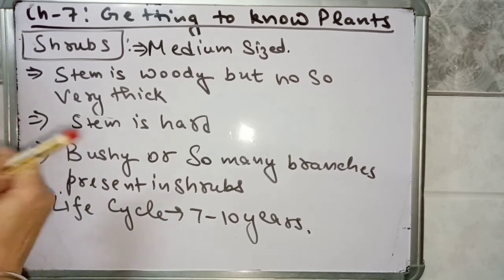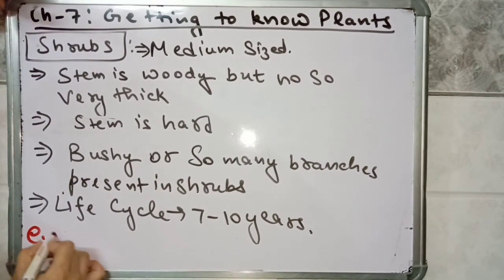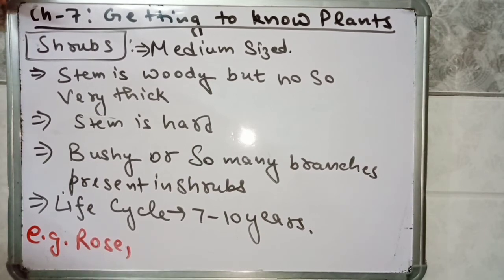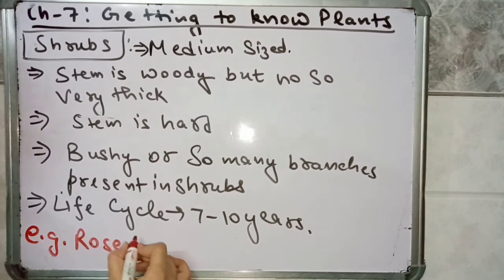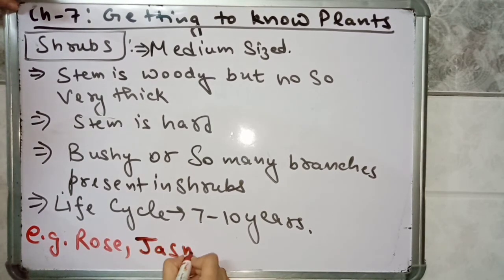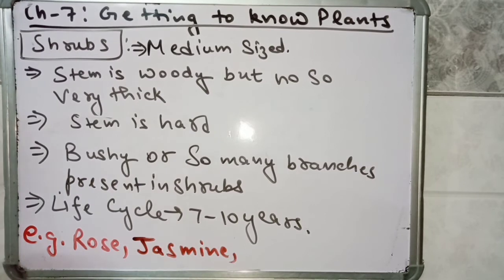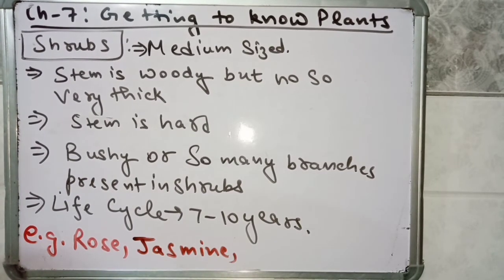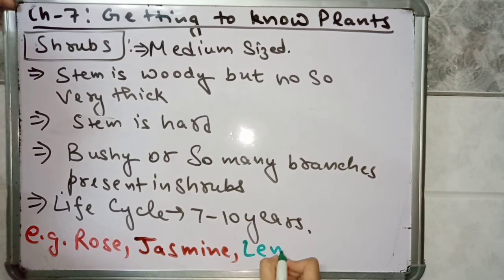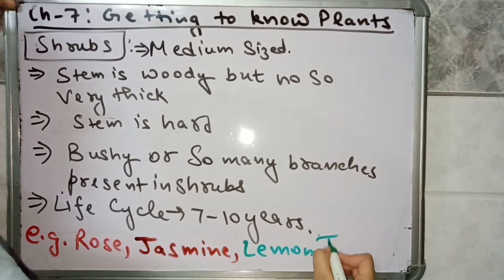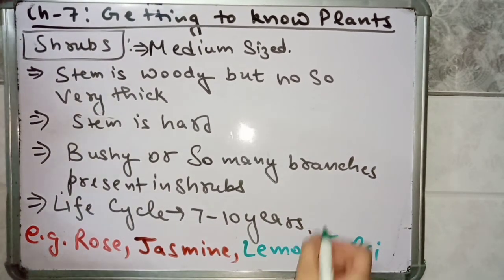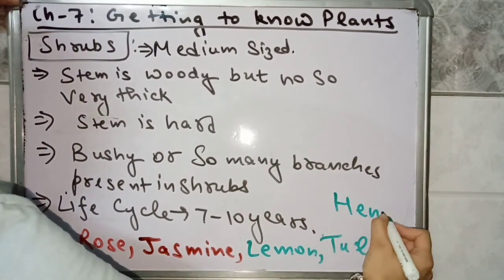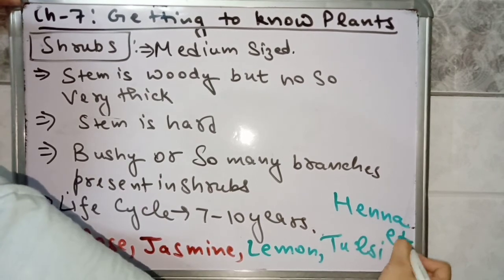The examples of shrub plants are rose, jasmine, lemon, tulsi, and henna. All these are shrubs.